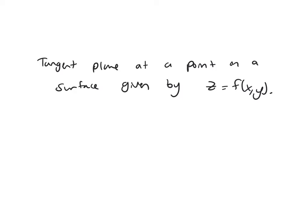Well, remember in our equations, we need to have zero on one side of our equation. So I would have zero equals f of x, y minus z.